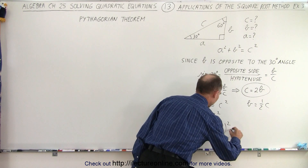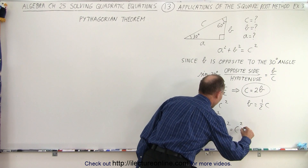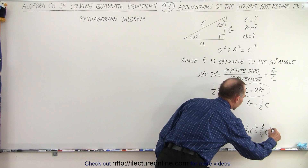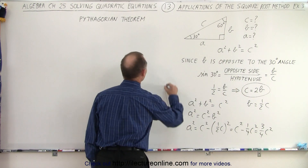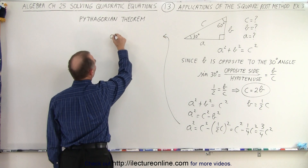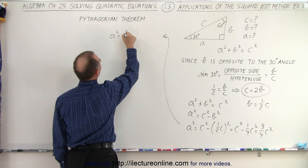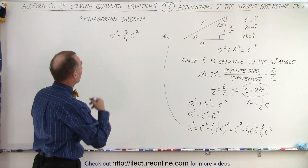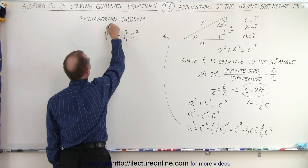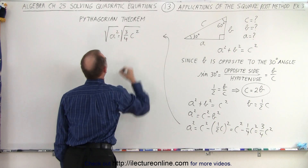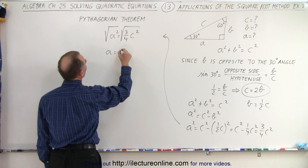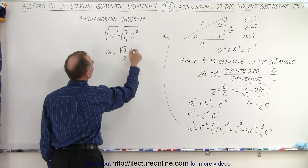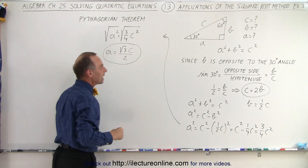So a squared is equal to c squared minus the quantity one-half c, squared. That becomes c squared minus one-quarter c squared, which equals three-quarters c squared. So a squared is equal to three-quarters c squared. Using the square root method, we take the square root of both sides, giving us a equals the square root of three times c over two, since the square root of four equals two. Now we have a relationship between a and c.